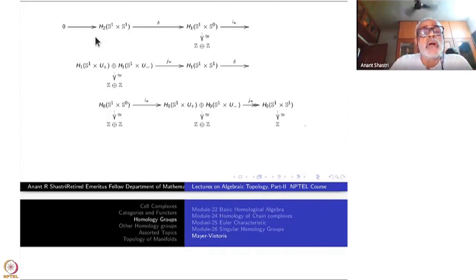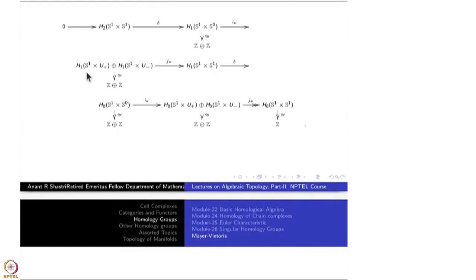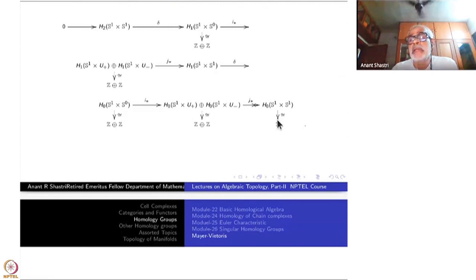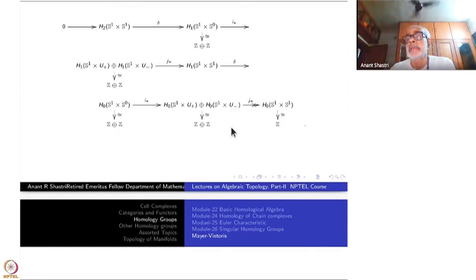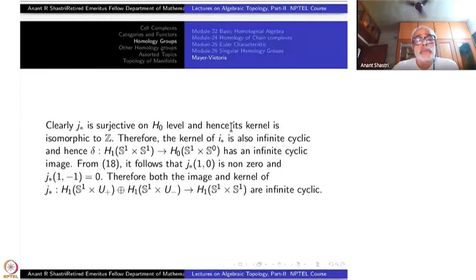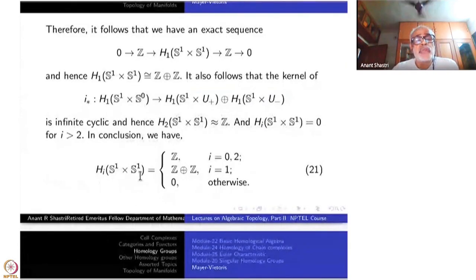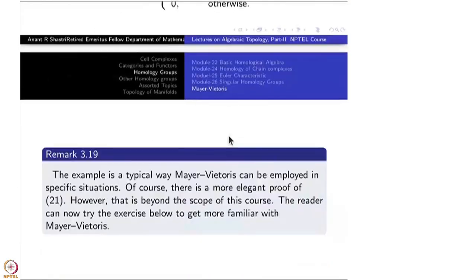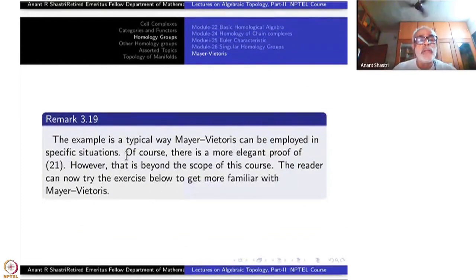That completes the computation of the homologies of S^1 × S^1. All other groups are 0 because beyond H_2, H_i(S^1) = 0. To summarize: H_i(S^1 × S^1) = Z for i = 0 and i = 2; H_1(S^1 × S^1) = Z ⊕ Z; and 0 otherwise. This example is a typical way the Mayer-Vietoris sequence can be employed. Of course there are more elegant proofs using the Künneth formula, which we will not cover in this course.